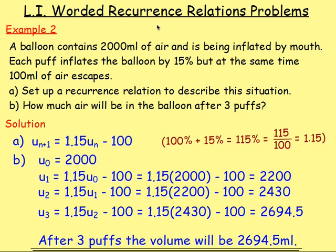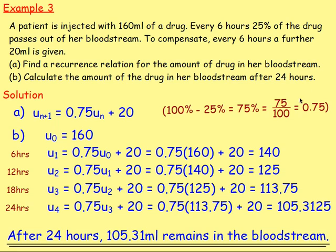We then saw that you can apply this to worded Recurrence Relations — real-life contexts. You use multipliers here because often something is increasing or decreasing by a percentage, but you can't use multipliers the same way as National Five because you'll often be adding or subtracting something as well. For example, one question had values going up by 15%, giving 1.15·un, then minus 100 for the 100 millilitres of air escaping. In Higher, questions often relate to pollution or drugs in a patient's system, and this type of example is very common in exams.